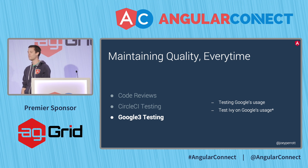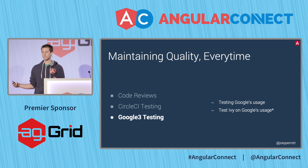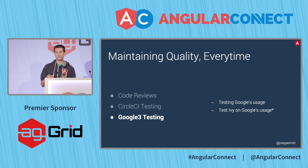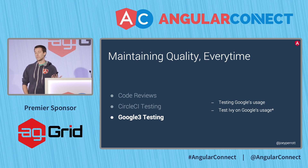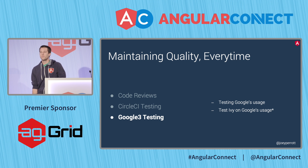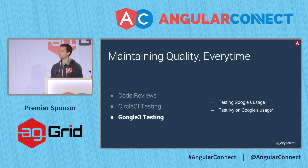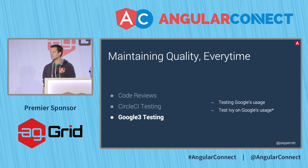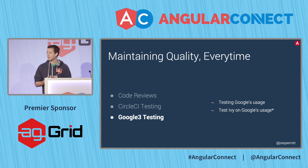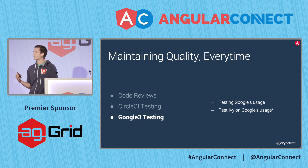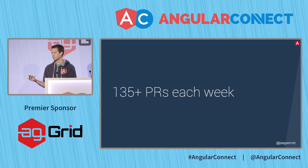We've talked previously about how Google actually builds using Angular master. To make sure that's possible, we check that we don't break anything in Google for everything we want to bring into our repository. Googlers are very good at using code creatively, and it leads to a very solid test suite — essentially any possible usage of the code is found somewhere in Google's repository. So we have hundreds of thousands of tests checked for each PR before we merge them into GitHub. We're doing the same now for testing Ivy — view engine code passes 100%, and for Ivy we're currently at just under 98%.